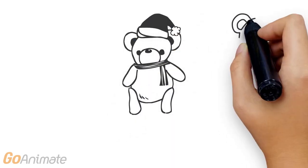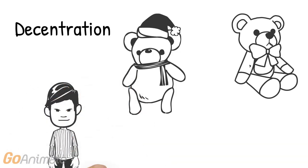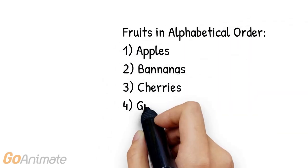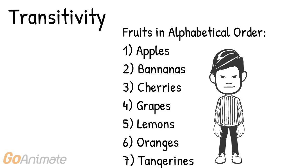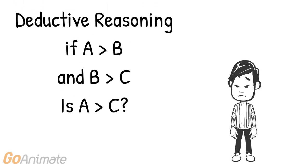A concrete operational child can look at multiple aspects of a problem or decision — for example, weighing the different aspects of two teddy bears to decide which one he likes best and why. Concrete operational children also know transitivity, meaning they can put things in order based on characteristics or criteria. However, children in this stage have trouble with deductive reasoning — for example, concluding that if A is greater than B and B is greater than C, then A is greater than C. They struggle to combine multiple facts to draw a conclusion.